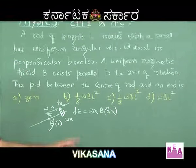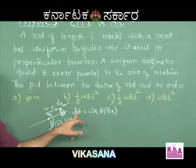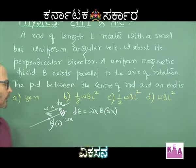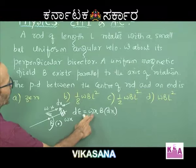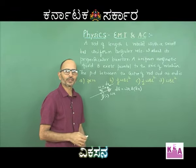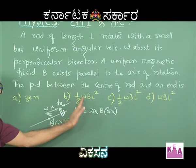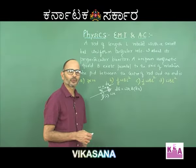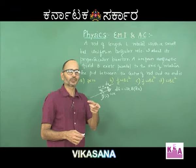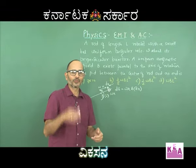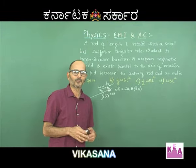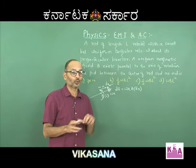Remember, l here is not the length of the whole rod — it is only the length of that element dx. So this is the small motional EMF, which is basically because the rod is moving in a magnetic field. So dE = omega x · B · dx. You should also understand which end of that element becomes positive and which becomes negative — and while explaining this, you will also understand why the first problem gave zero EMF.